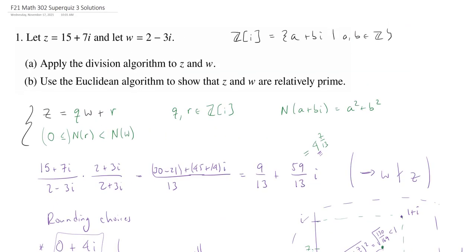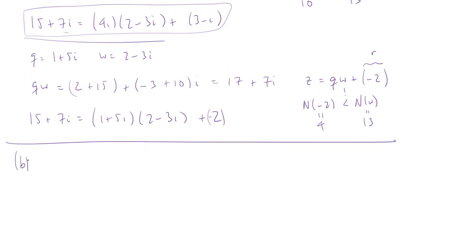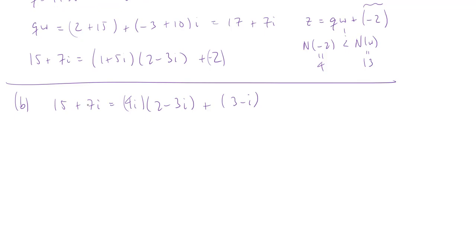There's a second part to this problem. After applying the division algorithm, we're supposed to use the Euclidean algorithm to show that Z and W are relatively prime. We'll pick one of these — let's use the more complicated looking one as the first step. So in part b, we have 15 plus 7i = 4i times (2 minus 3i) plus (3 minus i). In the next step of the Euclidean algorithm, we slide these over: 2 minus 3i = something times (3 minus i) plus something. So I need to apply the division algorithm again.